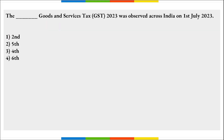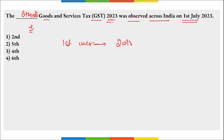GST Day 2023 was observed across India on 1st of July. It was the 6th edition of GST Day, observed on 1st July 2023. The first ever edition was observed in 2018, which marked the 1st anniversary of GST Day.